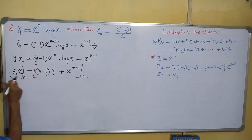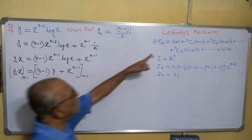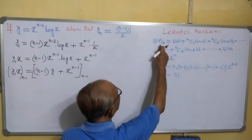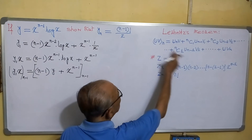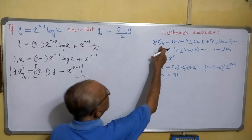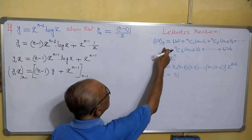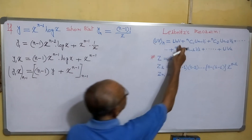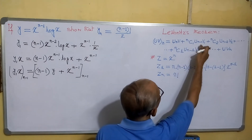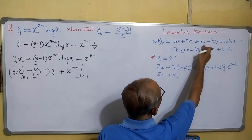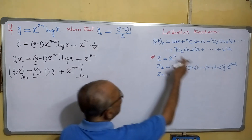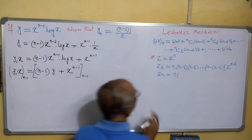So if we apply Leibniz's theorem — you know that if two functions are there, (uv)_n equals u_n·v plus nC1·u_(n-1)·v₁, and so on. That is the nth derivative of the first one into the second, plus nC1 times the (n-1)th derivative into the first derivative of the second, et cetera. You know this theorem and it is simple to remember.